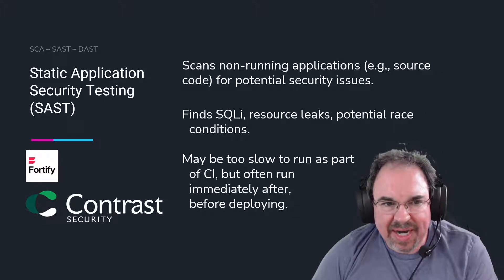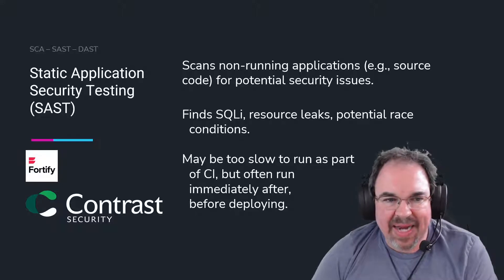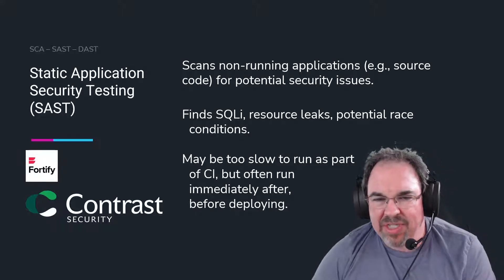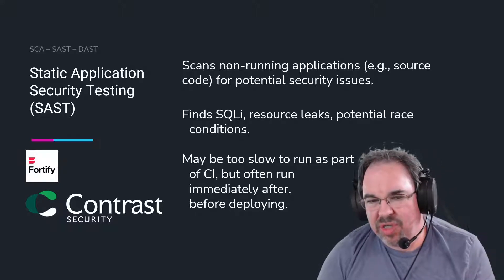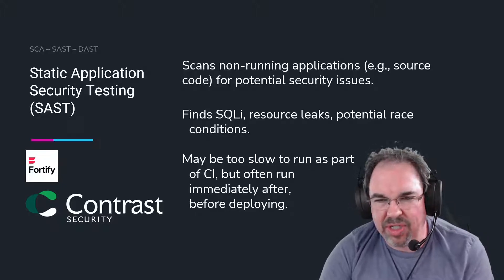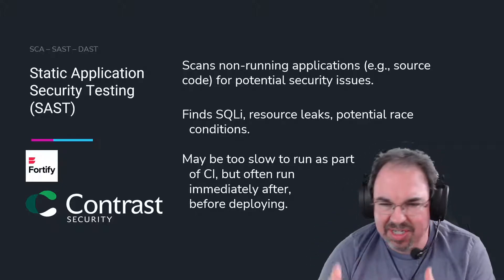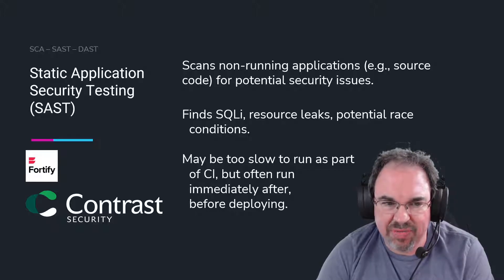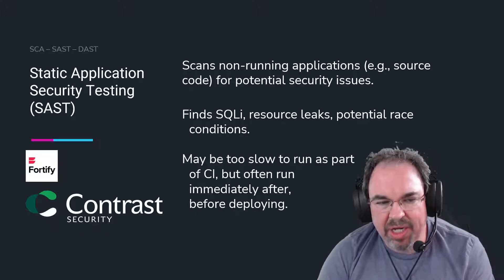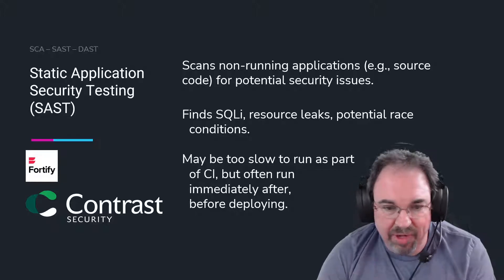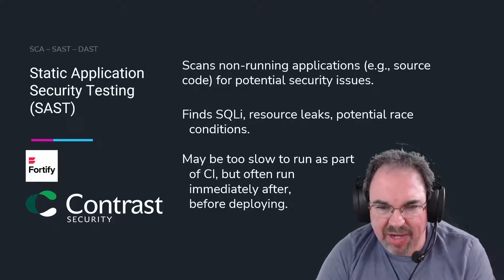The next acronym is SAST, Static Application Security Testing. This is where tools look at your source code, looking for potential security issues. They find things like SQL injection, resource leaks, and potential race conditions. They're not looking at running code — they're looking at non-running code, your source code or your just-compiled code, but not running it.